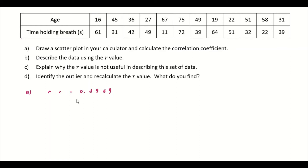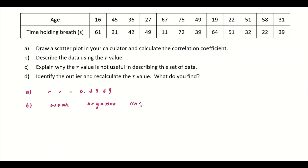Describe the data using the R value. By looking at this, we know it's negative, and the magnitude is pretty near to 0, but it's still in a range where you can say it's linear — not to the extent of no relationship. So we say it's a weak negative linear relationship.